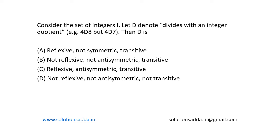This is a question from discrete mathematics. Consider the set of integers I. Let D denote 'divides with an integer quotient.' For example, 4D8 but 4D7 is not possible. So it means that 4 can divide 8 but 4 cannot divide 7 with an integer quotient. Then D is, and 4 options are given. So first of all,